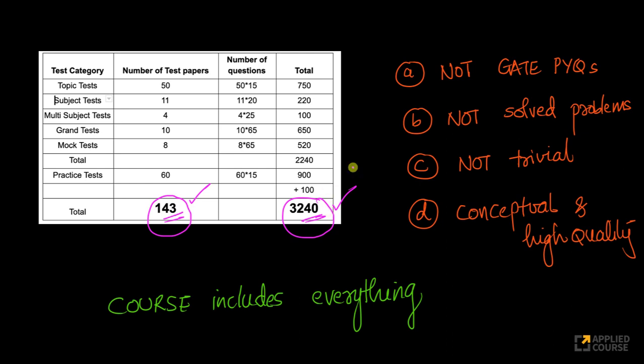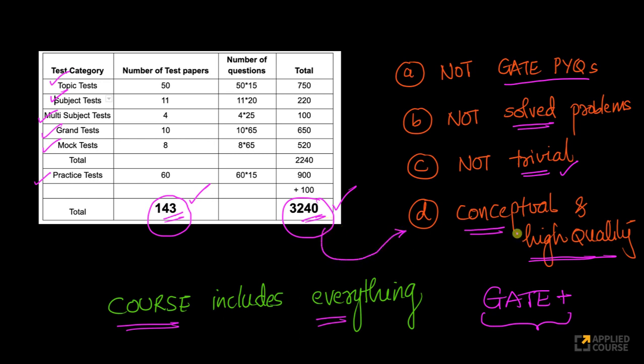And these are not just some copy-paste questions. We've put a lot of effort in designing these questions very carefully. We have a total of 143 tests which consists of 3,240 questions. What is the important aspect about these questions? These are not previous year GATE questions. These are not solved problems that we have already solved as part of the course videos. These are not trivial stuff. These are extremely conceptual. They are designed very carefully by our team so as to make sure that the student's conceptual depth improves and they're very high quality. Most of these questions are at GATE level or slightly above GATE level, so that they are on time for their preparation even if the GATE exam is slightly harder.